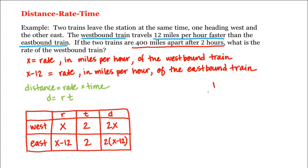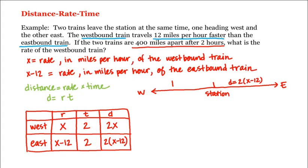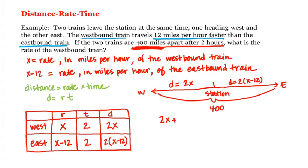Here's the station. After two hours, the distance the eastbound train has traveled is 2 times (x minus 12), and the distance the westbound train has traveled is 2 times x. We're told that after those two hours the two trains are 400 miles apart, which means this total distance is 400 — the sum of those two distances has to equal 400.